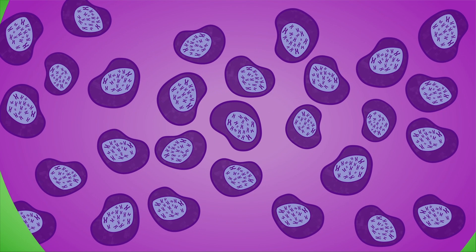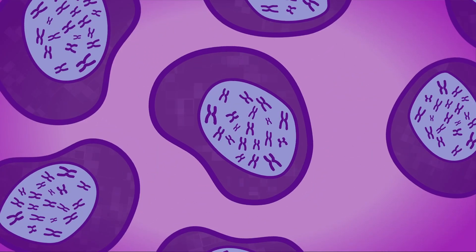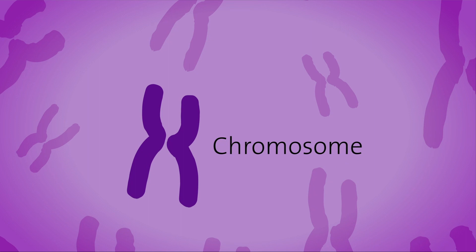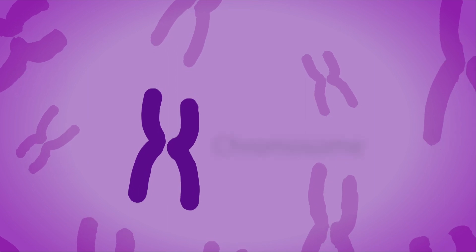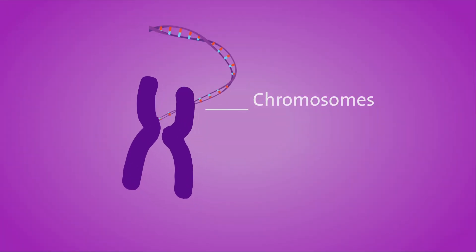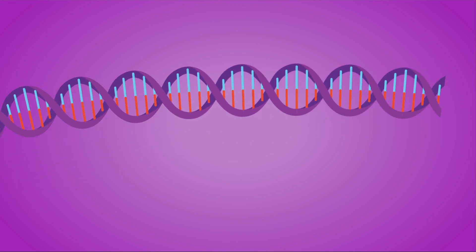Our body is made up of cells, and within these cells is DNA, or genetic information, which comes in the form of chromosomes and genes. Chromosomes are large bundles of DNA. Genes are smaller segments of DNA.